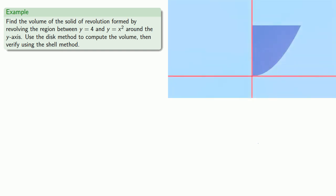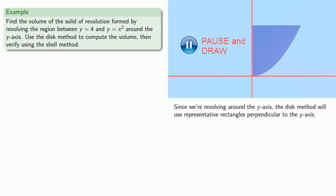Since we're revolving this around the y-axis, the disk method will use representative rectangles drawn perpendicular to the y-axis. Now we'll revolve our region and our representative rectangle around the y-axis.